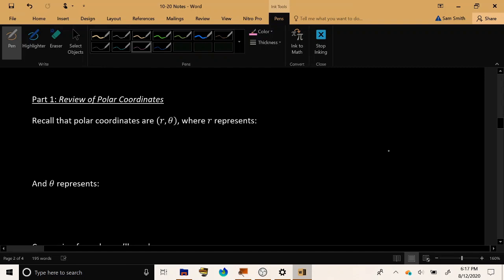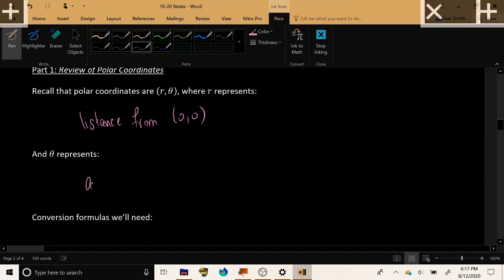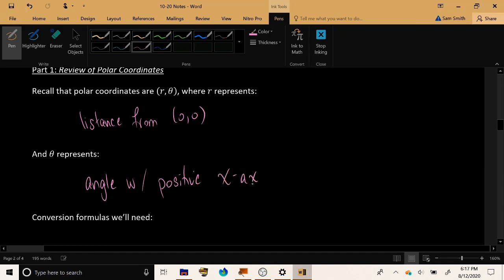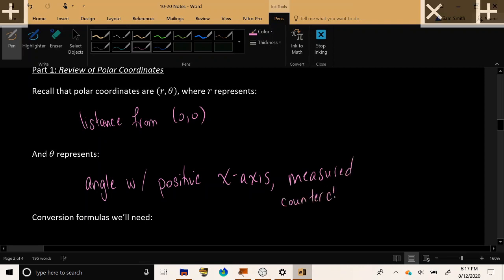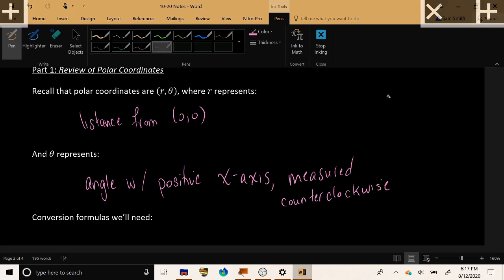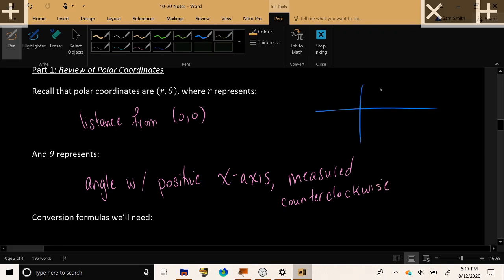Polar coordinates are represented by the two numbers r and theta. r represents the distance from the origin and theta represents the angle with the positive x-axis measured counterclockwise. For example, if I have a point in the x-y plane, r would be the distance from that point to the origin and theta would be the angle made with the positive x-axis.